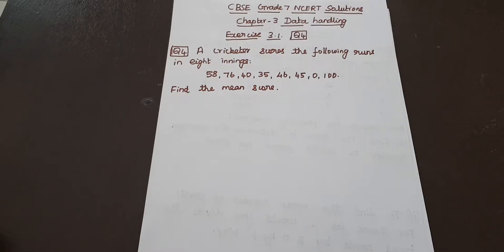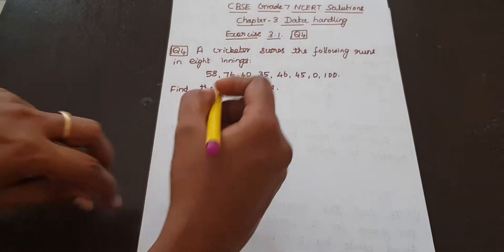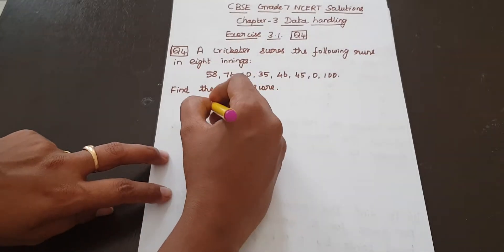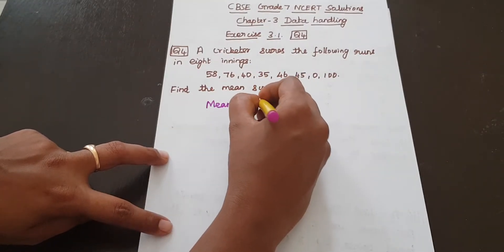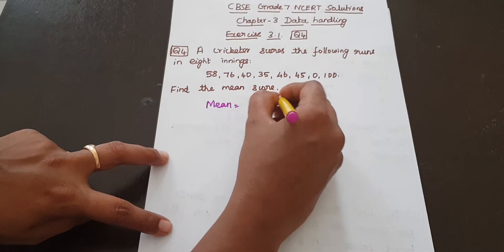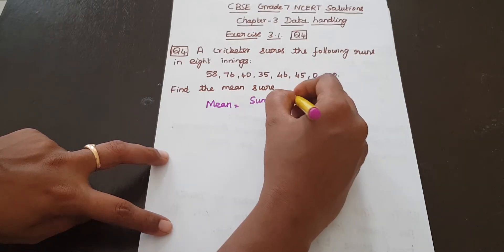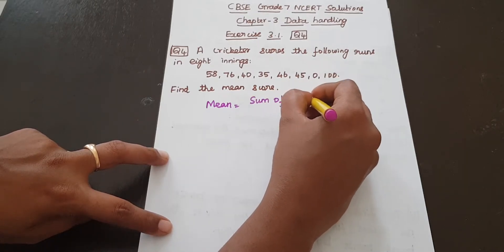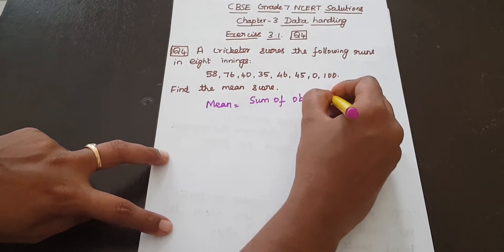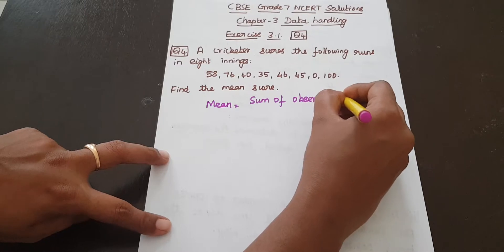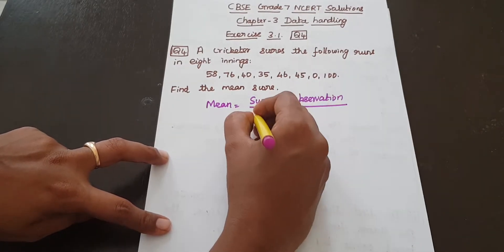So, one cricketer scores in 8 innings. That means mean is equal to sum of observations divided by number of observations.